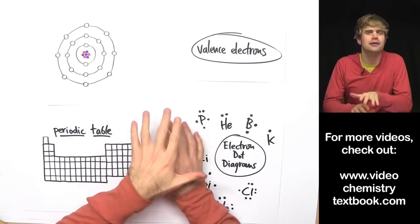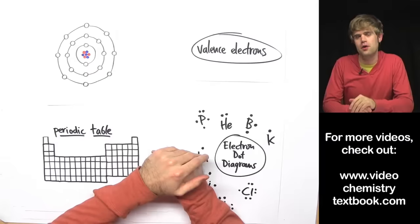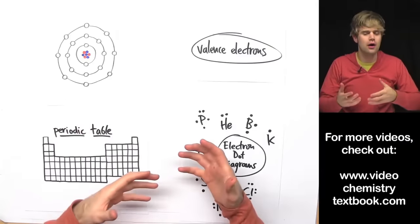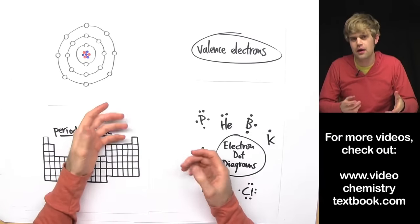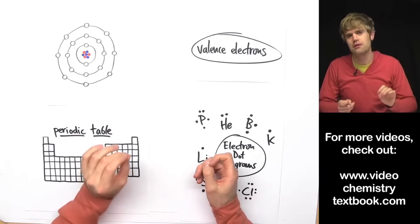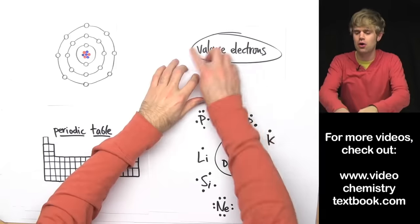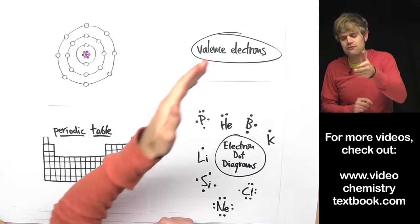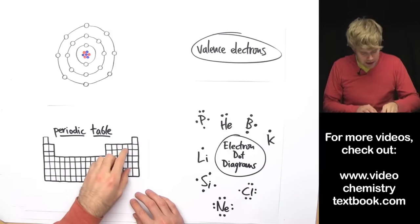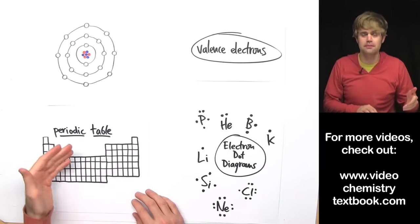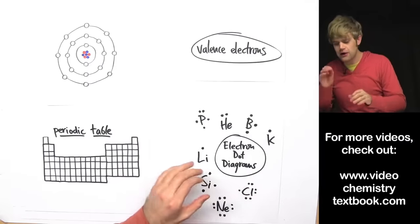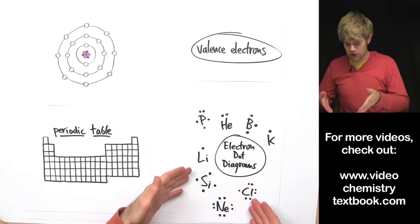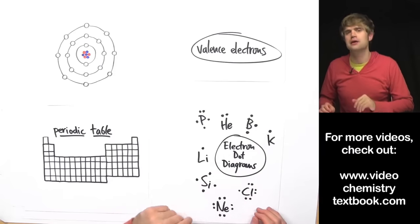In the next couple minutes we're going to talk a lot about electrons. First we're going to start out looking at an atom and the spaces where electrons can live. Then we'll learn about the most important type of electrons in an atom — these are called the valence electrons. We'll learn how to figure out how many valence electrons an atom has by looking at where it is on the periodic table, and finally we'll look at how to draw electron dot diagrams.